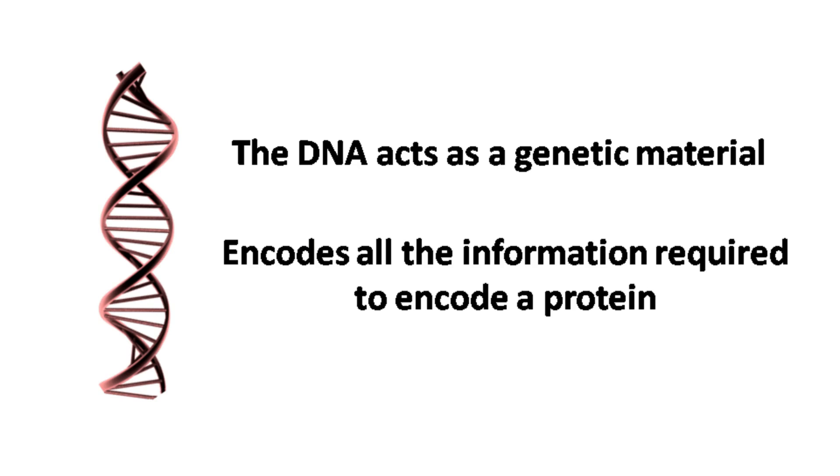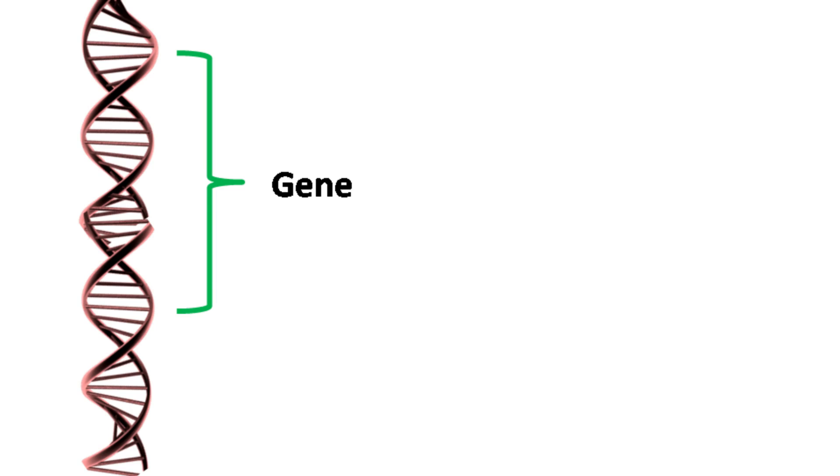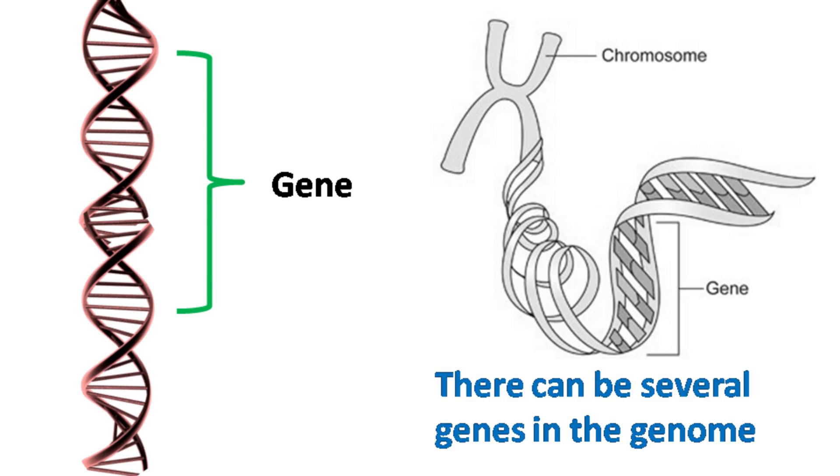The DNA acts as genetic material and encodes all the information required to encode a protein. The specific region of DNA that encodes the genetic information is called a gene and there can be several genes in the genome.